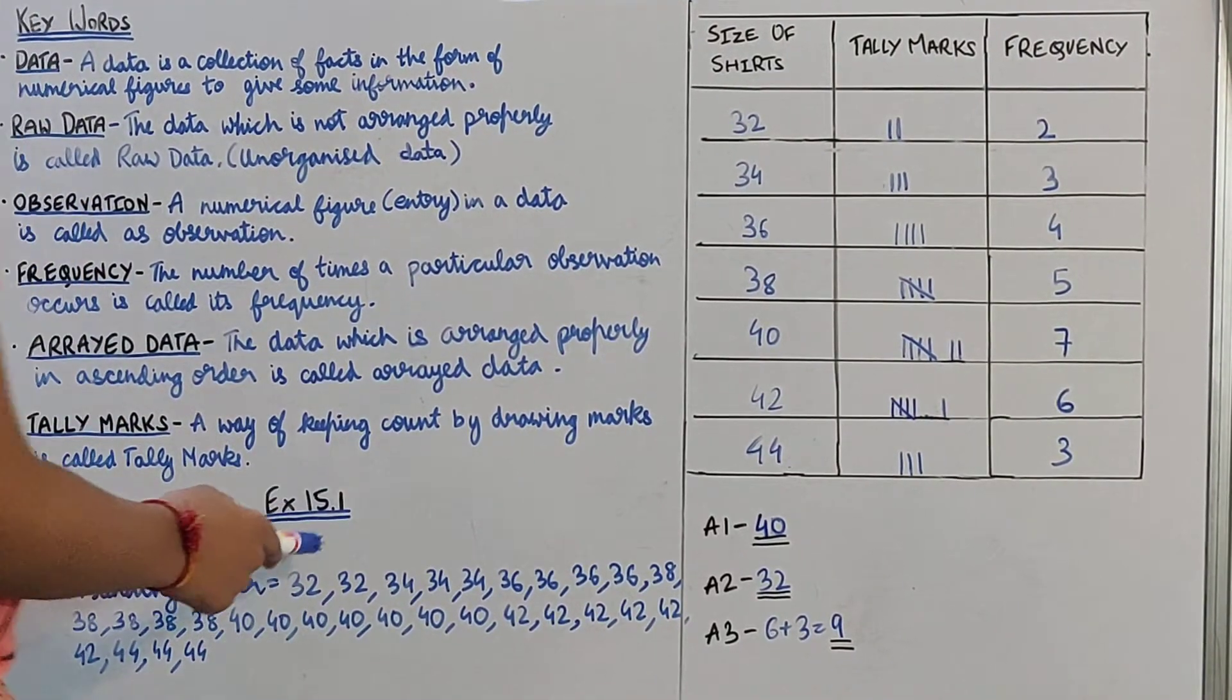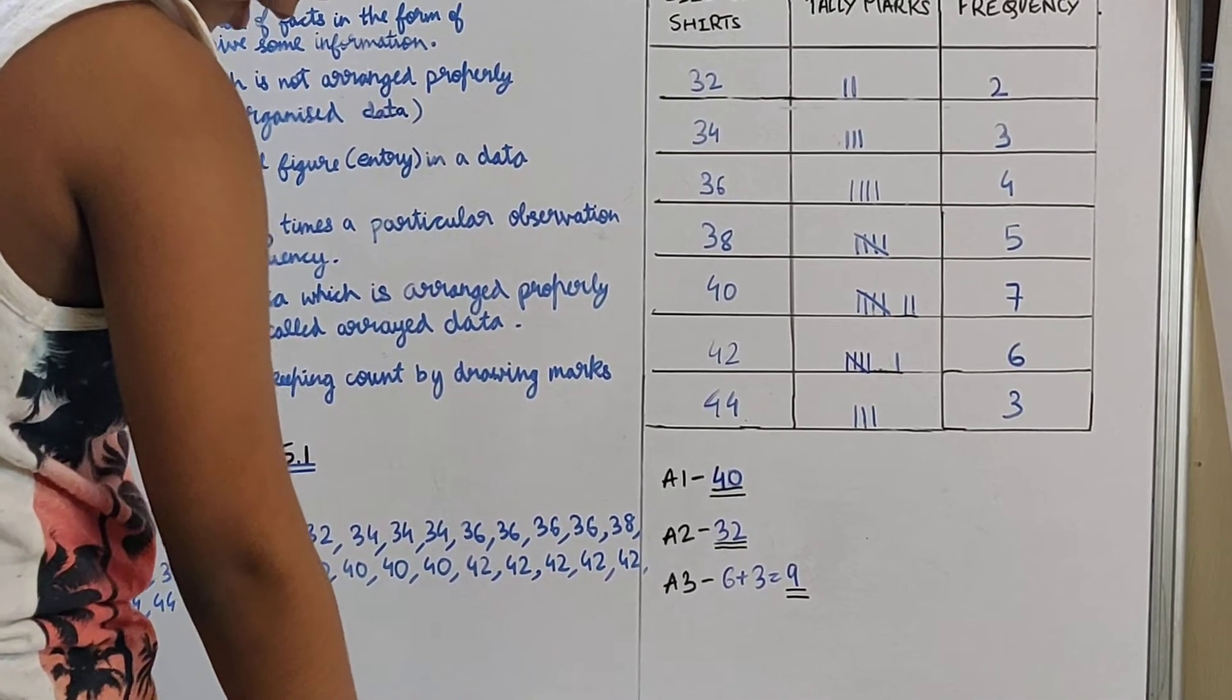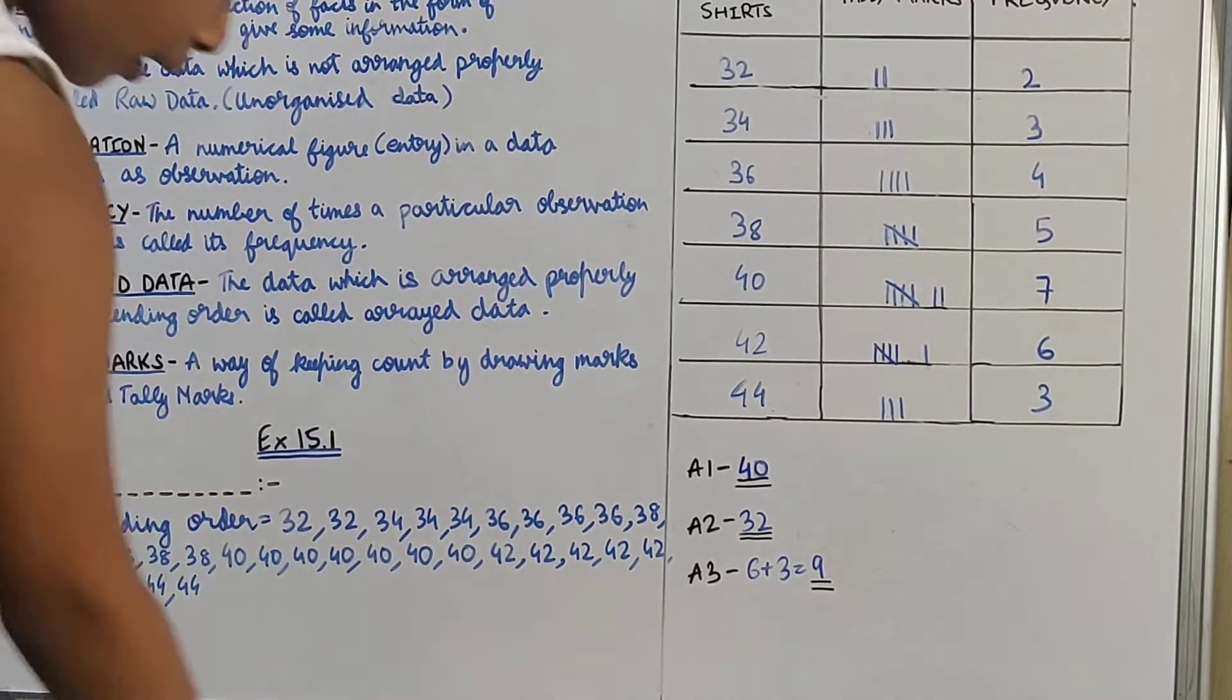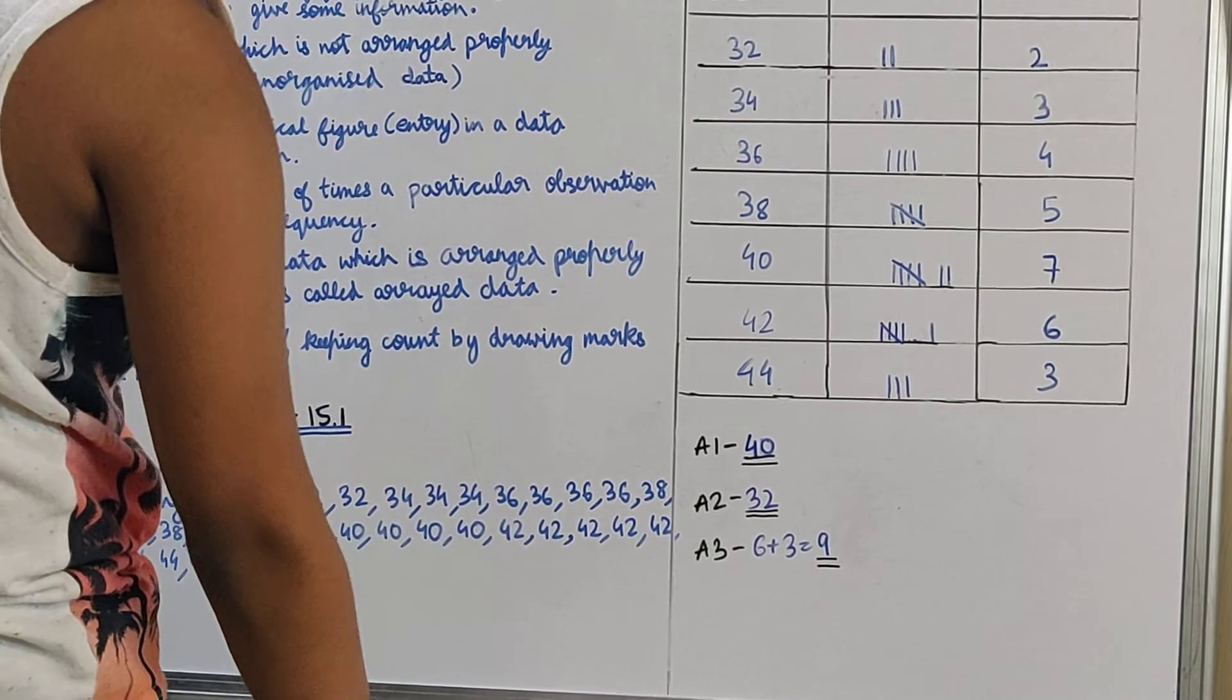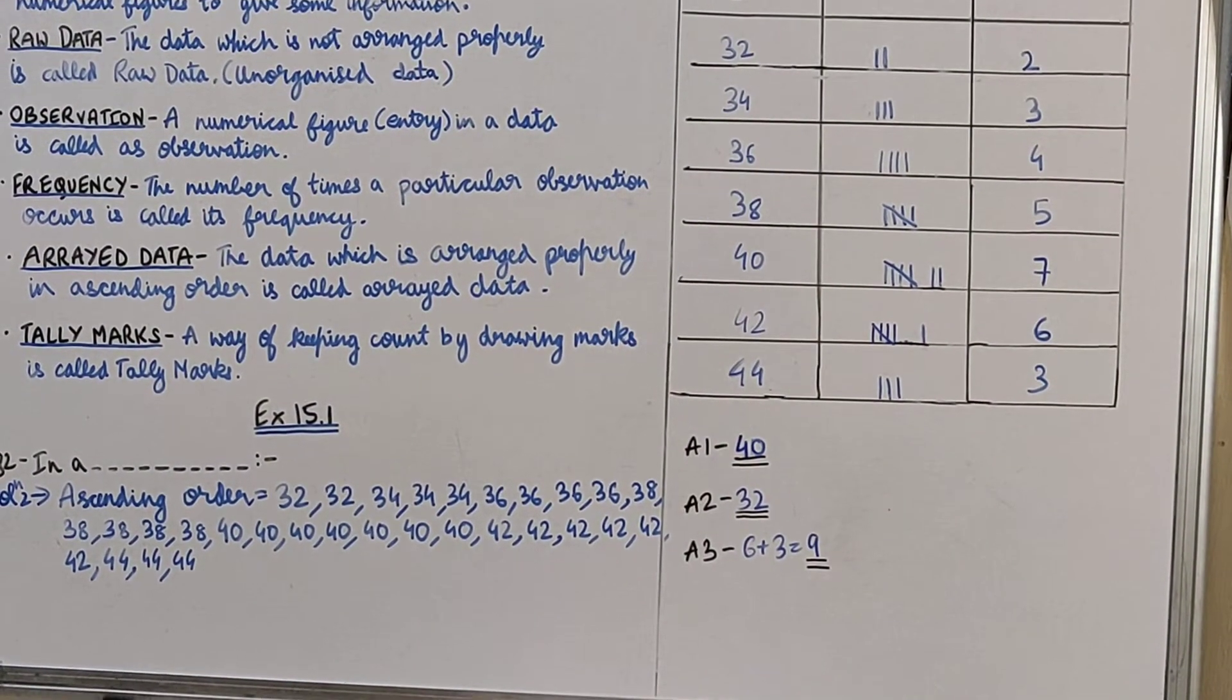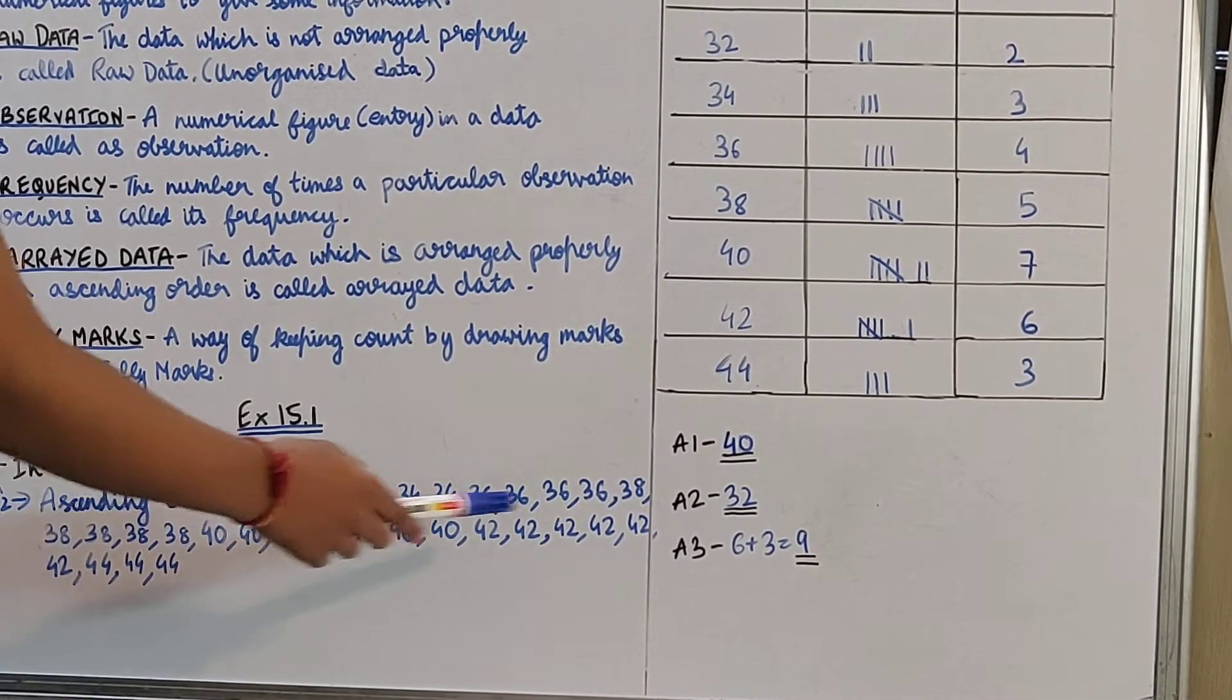So now we will start with Exercise 15.1. In a ready-made garment shop on a particular day, the following sizes of shirts were sold. So these were the sizes. Now they have asked: arrange the above data in ascending order and construct a frequency distribution table. We will also answer the following questions. So first you have to find the ascending order. We have to arrange in ascending order the data which is given. So here the ascending order is given.